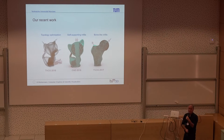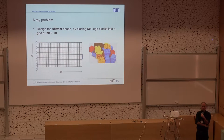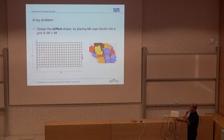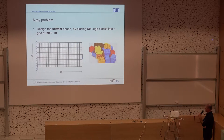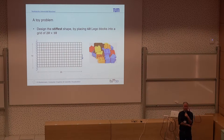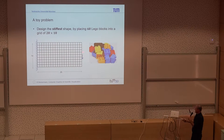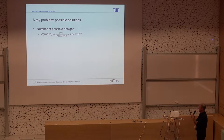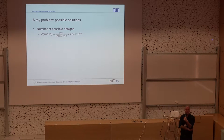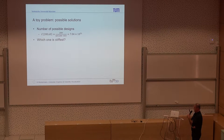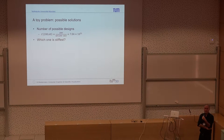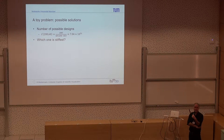So first of all, what is topology optimization? Let me explain this by means of a little toy problem. Assume you have 60 Lego blocks and a discrete grid. You want to place these Lego blocks into the grid so that the resulting shape is stiffest — most resistant against a force which is applied. The design space is quite large; we cannot go over all possible solutions individually. We need some machinery to let the computer figure out the stiffest shape automatically.